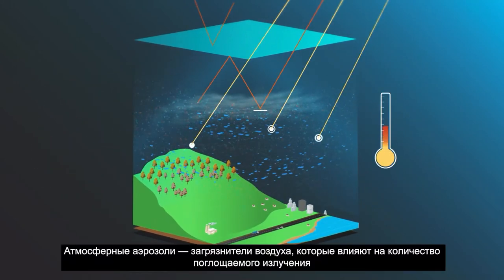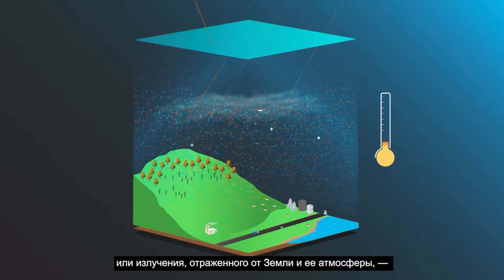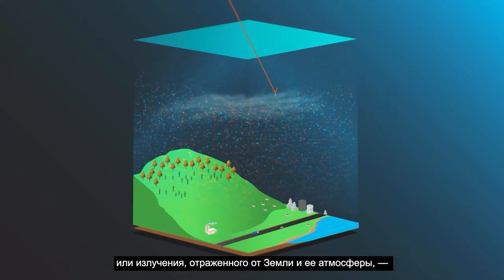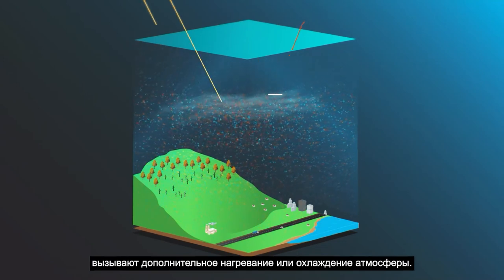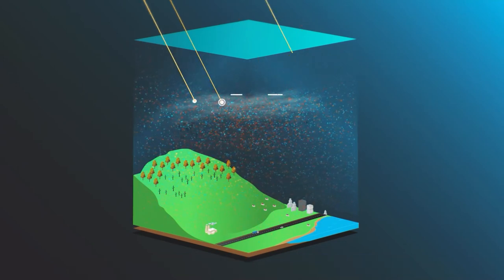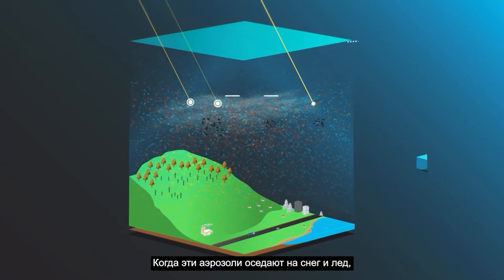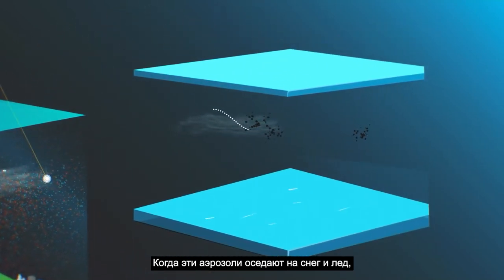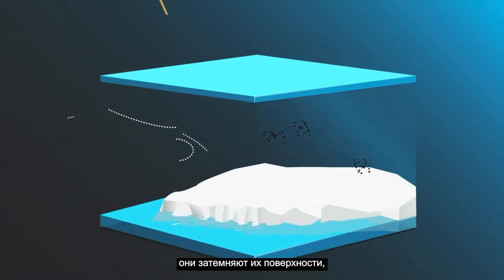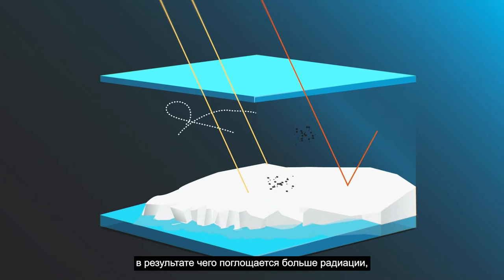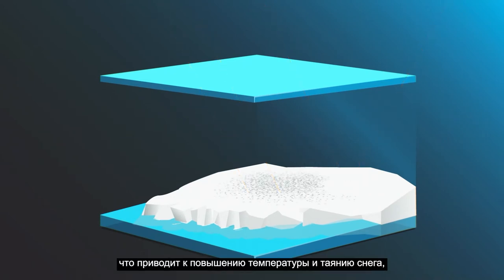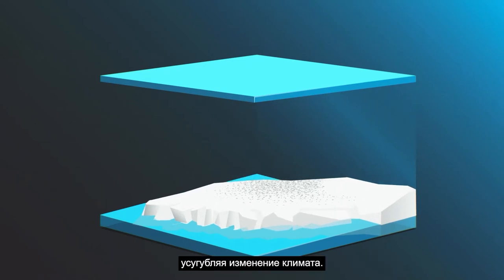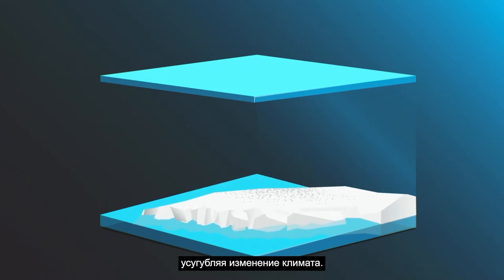Atmospheric aerosols, air pollutants that impact the amount of radiation absorbed or reflected by the Earth and its atmosphere, cause additional heating or cooling of the atmosphere. When these aerosols are deposited on snow and ice, they darken their surfaces, resulting in more radiation being absorbed, leading to warmer temperatures and melting snow, exacerbating climate change.